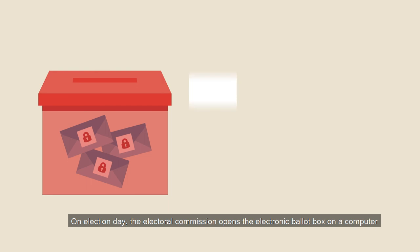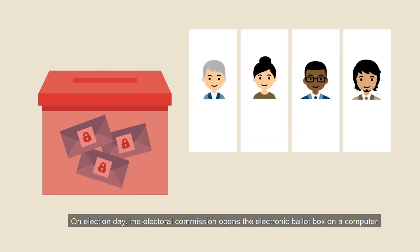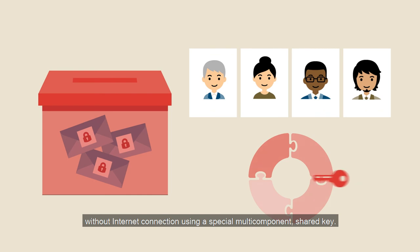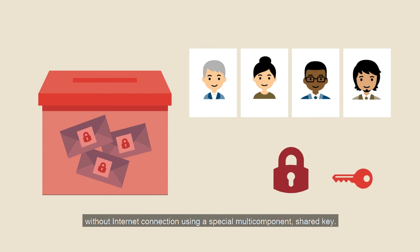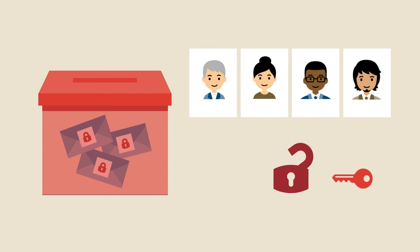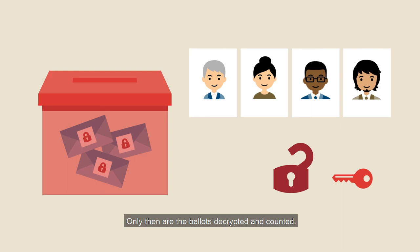On election day, the Electoral Commission opens the electronic ballot box on a computer, without internet connection, using a special multi-component shared key. Only then are the ballots decrypted and counted.